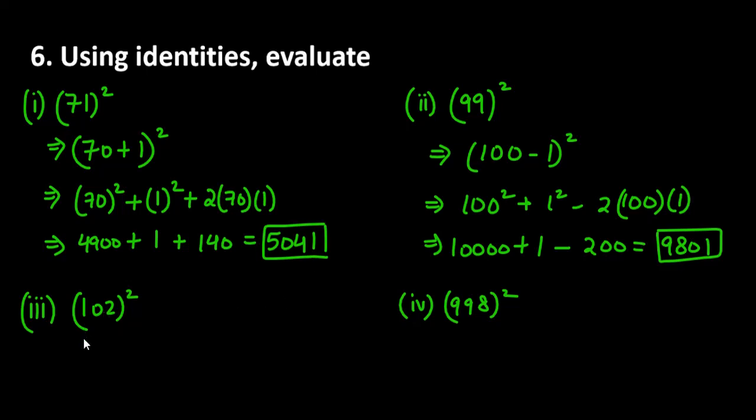In part c you can see 102 whole square. First we break this as 100 plus 2 whole square. It will be 100 square plus 2 square plus 2 into 100 into 2. This is 10000 plus 4 plus 400 so final will be 10404.